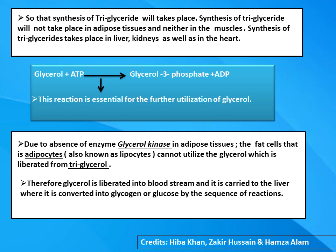The glycerol that is liberated reacts in the presence of ATP to synthesize glycerol-3-phosphate, with one ADP removed. This reaction is essential for the further utilization of glycerol. Due to the absence of glycerol kinase in the adipose tissue, the fat cell cannot utilize the glycerol liberated from triglyceride. Therefore, glycerol is released into the bloodstream and carried to the liver, where it is converted to glycogen or glucose.